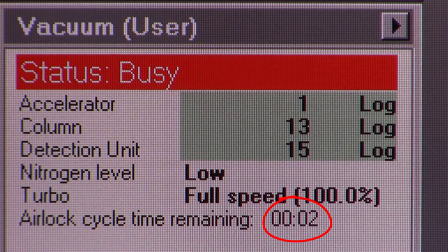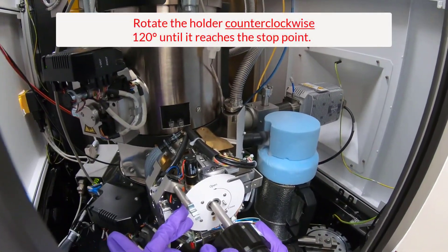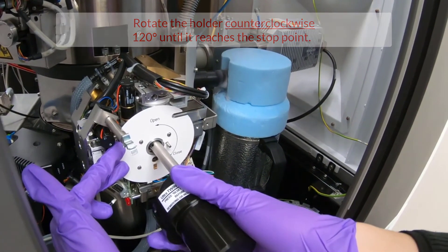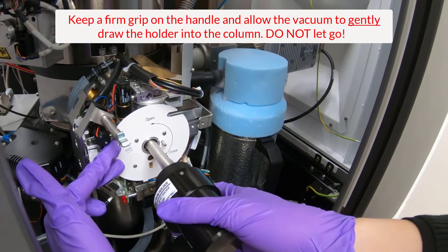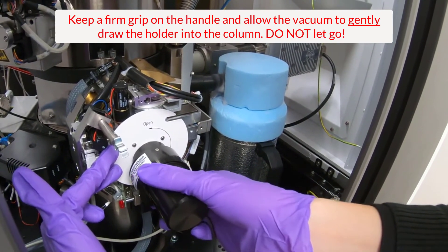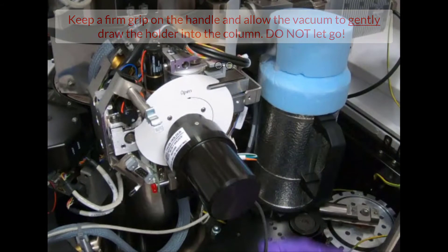Use a firm and steady grip on the black knob. Rotate the holder counter-clockwise 120 degrees until it reaches the stop point. Keep a firm and steady grip on the handle. Let the vacuum gently draw the holder into the column in a controlled manner until it reaches the stop point.